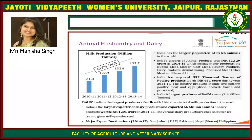India has the largest population of milch animals in the world. India's export of animal products was INR 32,529 crores in 2014–15, which includes major products like buffalo meat, sheep, goat meat, poultry products, dairy products, animal casings, processed meats, other meats and natural honey. India exported 557,000 tons of poultry products worth 651 crores rupees during 2014–15. Poultry products include live poultry, poultry meats and eggs — dried, cooked, frozen and preserved.